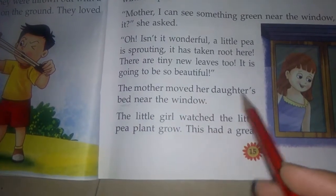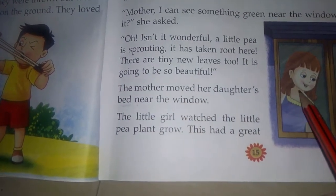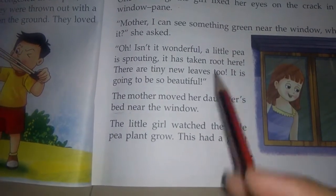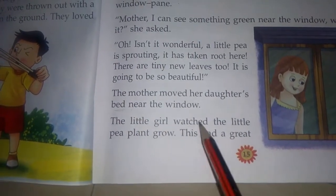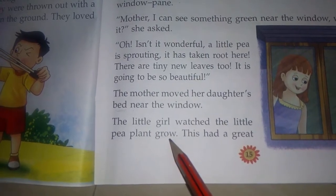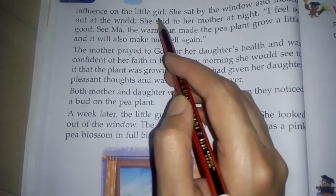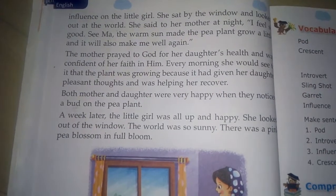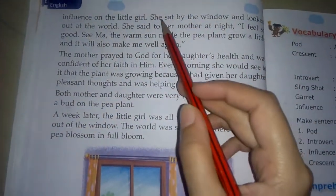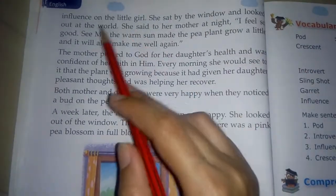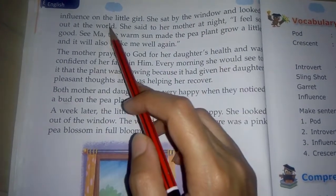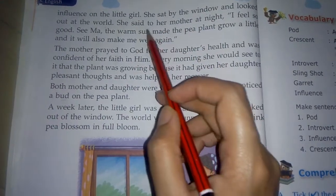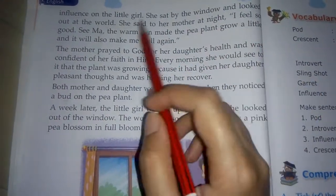The mother moved her daughter's bed near the window. The little girl watched the little pea plant grow. This had a great influence on the little girl. She sat by the window and looked out at the world. One day she said something to her mother at night: 'I feel so good.'